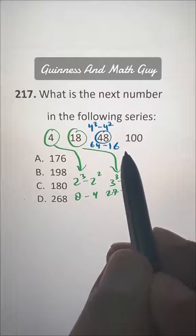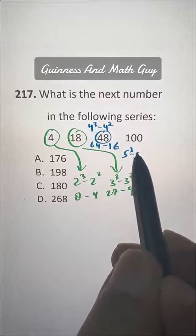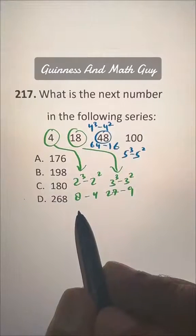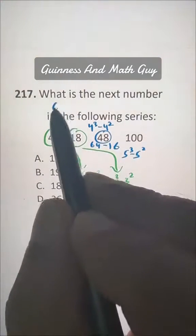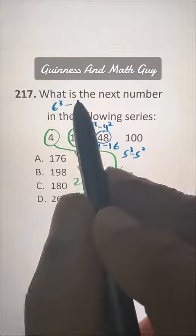And this is 5 cubed minus 5 squared. Now for the answer we have to get 6 cubed minus 6 squared.